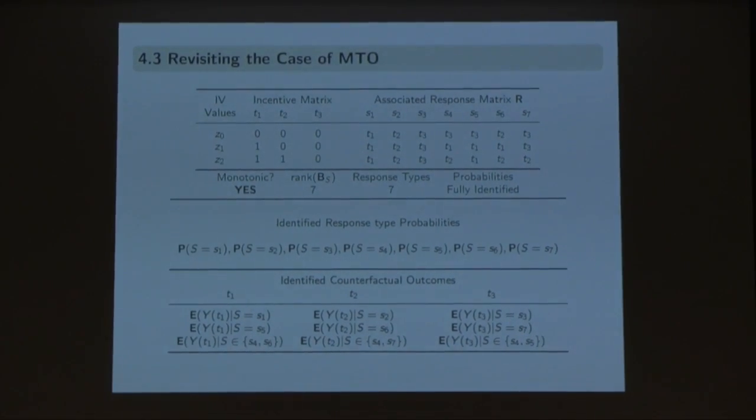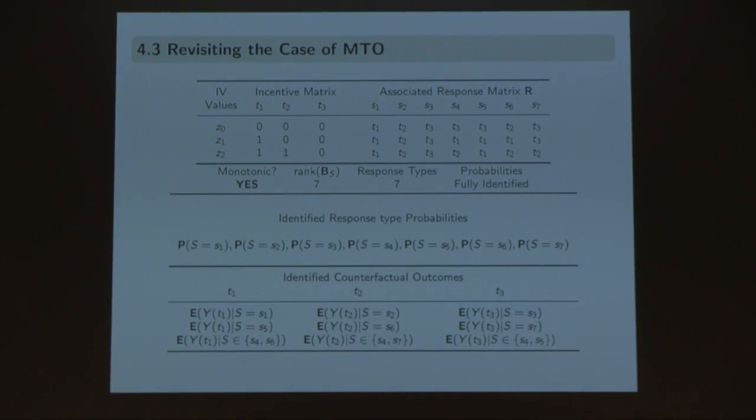We can also revisit the case of MTO. Applying the same methodology, I would have seven response types and be able to identify each one of these response type probabilities. I would also be able to identify a range of counterfactual outcomes based on this response matrix. What would look like a problem quite hard to solve — just using choice axioms, you can actually get lots of causal parameters.